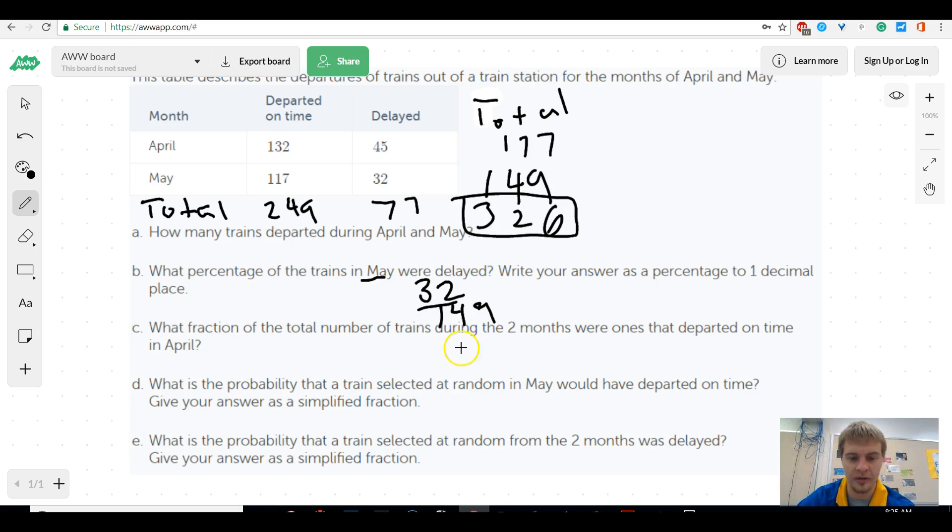What fraction of the total number of trains during the two months were departed on time in April? So, now, they do want the total number of trains, which is 326, and then departed in April. Well, that would be departed on time in April, 132. So, this one is the probability. Yep, so, what is the probability that a train selected at random in May? So, we don't want everybody, we just want the people in May again. Departed on time, well, 117 departed on time. And then, what is the probability that a train selected from the two months? So, we want everybody, was delayed. Well, delayed, there were 71 trains in total that were delayed. So, you can kind of see how this works.